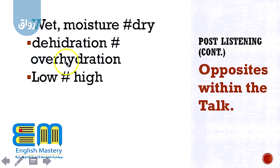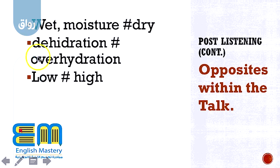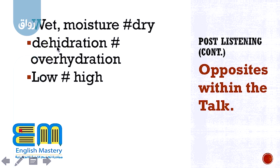So before we move on — do you see here 'D-E'? Usually the prefix D-E gives us a negative meaning. For example, 'hydration' — الترطيب — becomes 'dehydration' — الجفاف. And 'increase' becomes 'decrease' — نقص. So whenever we see the prefix D-E, it reverses the meaning of the word or gives it a negative meaning, similar to prefixes I-N, U-N, I-M — like 'impossible', 'incomplete'.